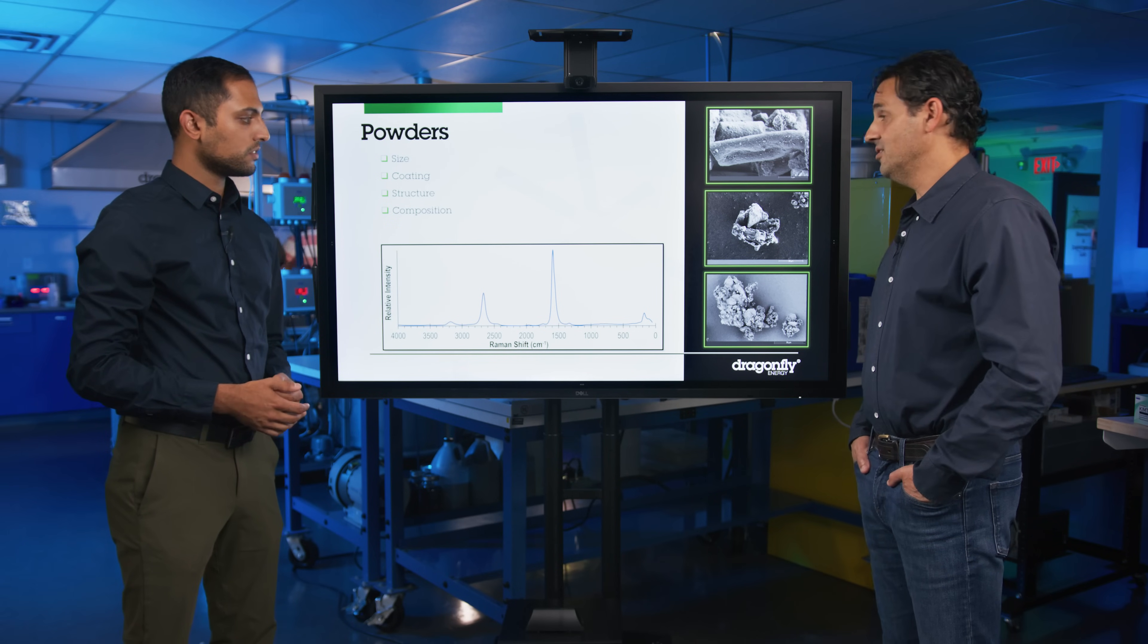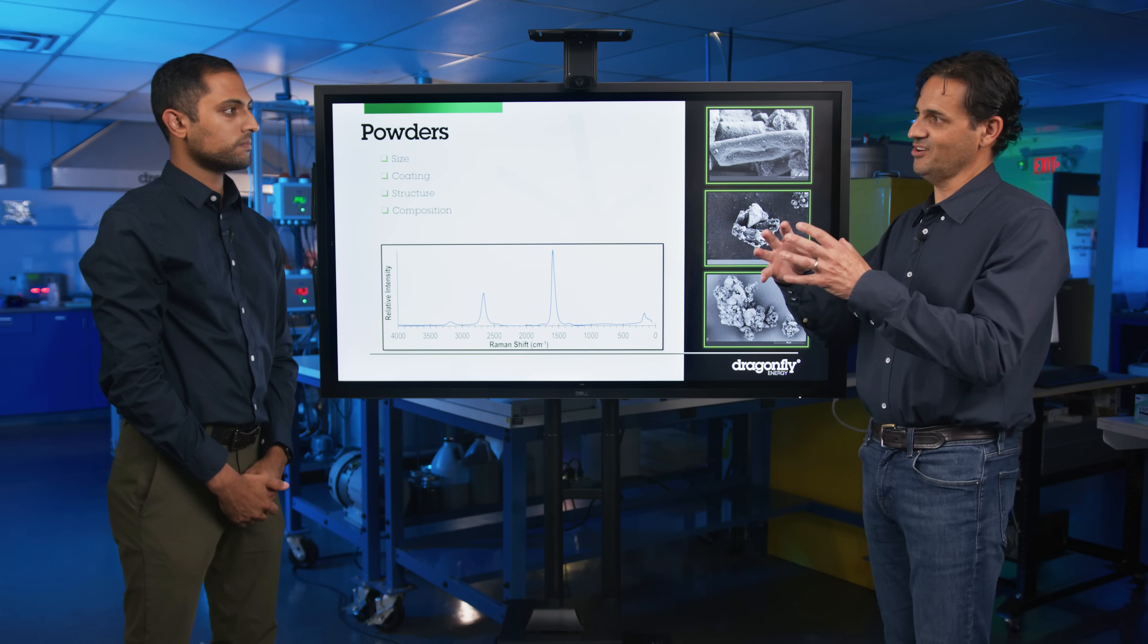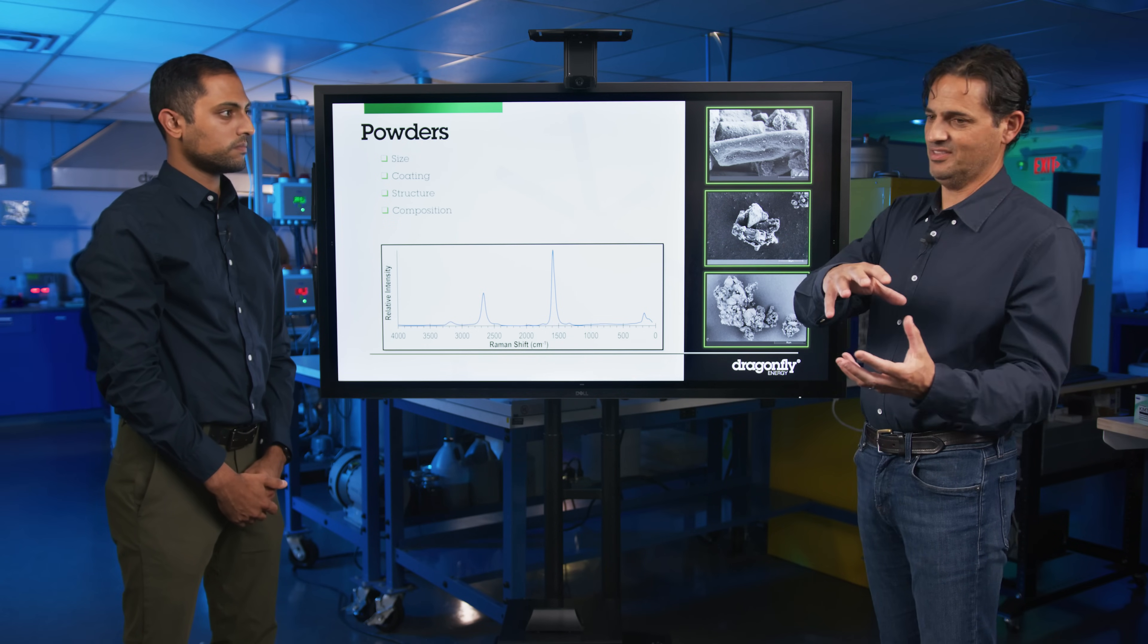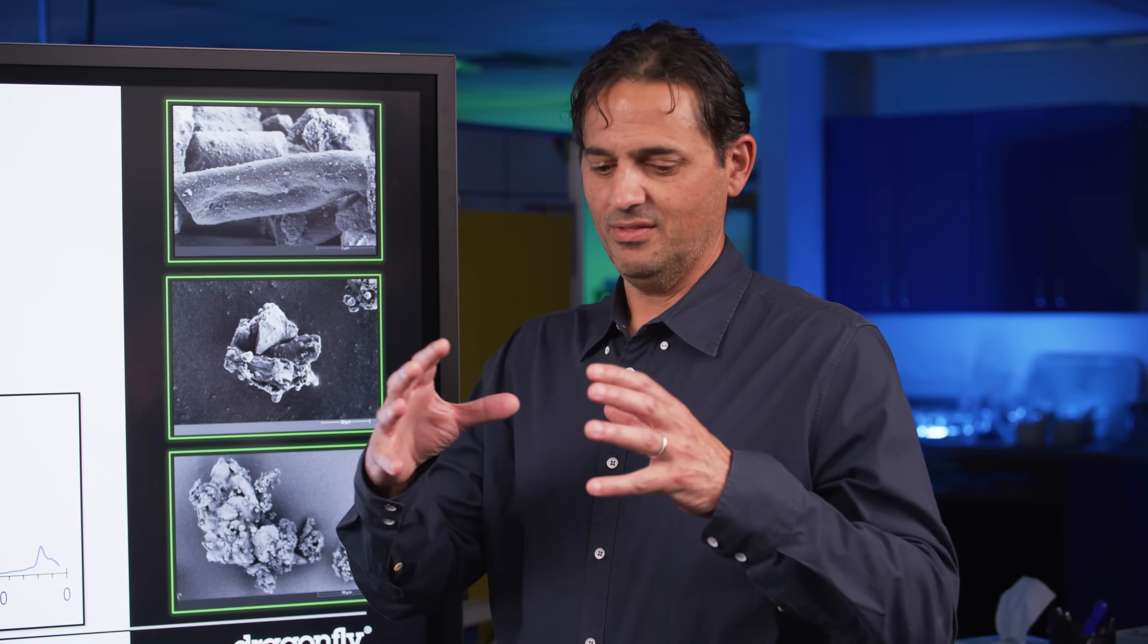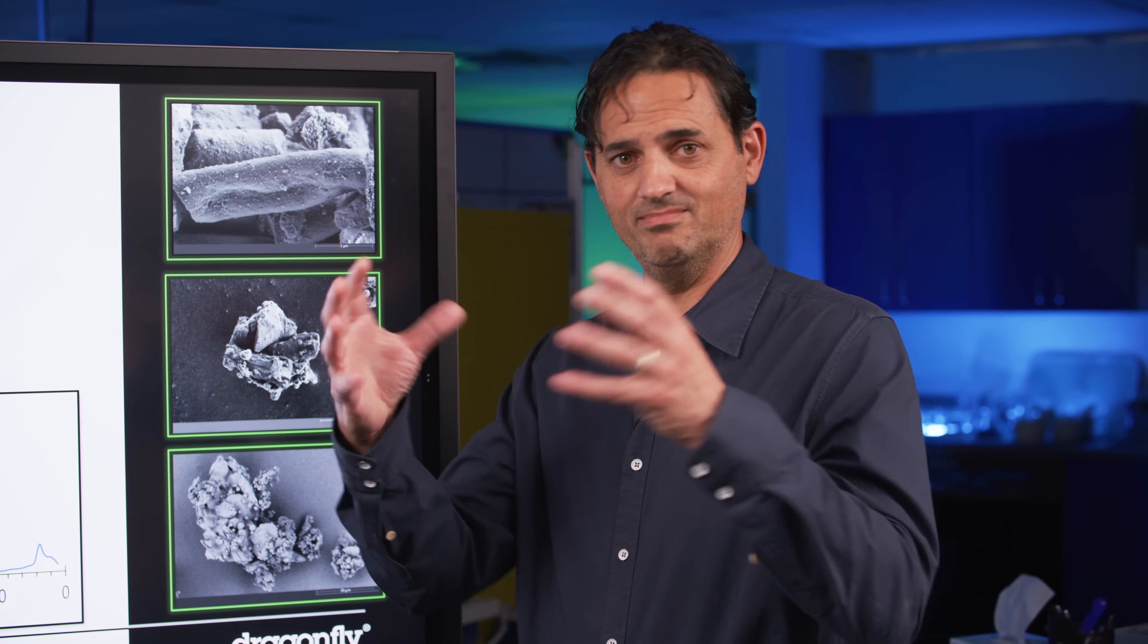So the anode or the cathode is a complex mixture of the intercalation material, which is either the lithium iron phosphate or the graphite, the carbon electron conductor, and the binder. So it's a big jumble, a big mess.